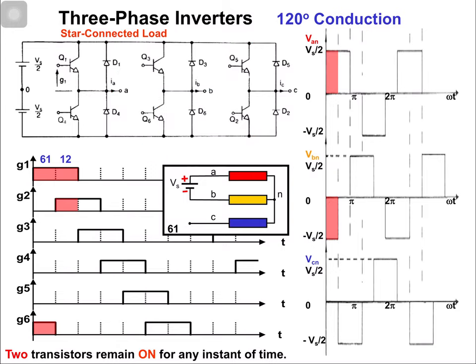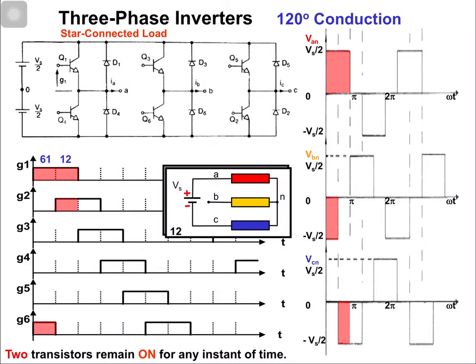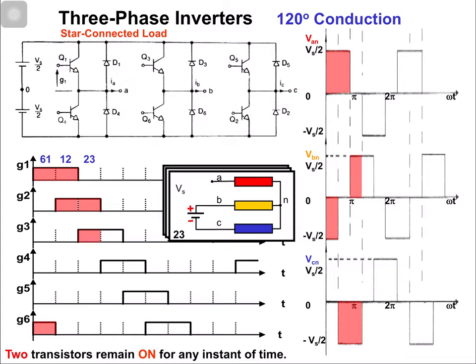In the second switching state 1 and 2: switch 1 is on and switch 2 is on. Because of switch 1, phase A is connected with the positive terminal. Because of switch 2, phase C is connected with the negative terminal. This is the equivalent circuit. Van = +Vs/2 in the second interval, vcn = -Vs/2, and vbn = 0.